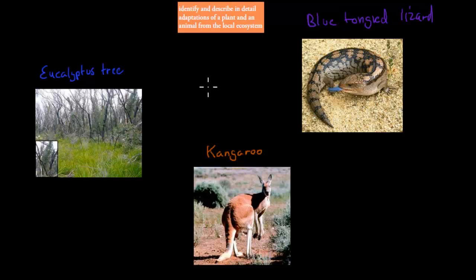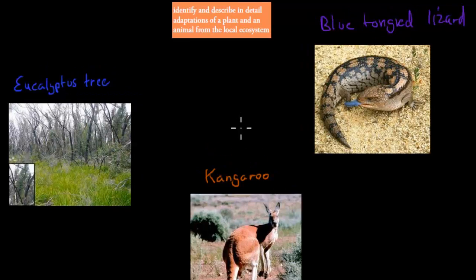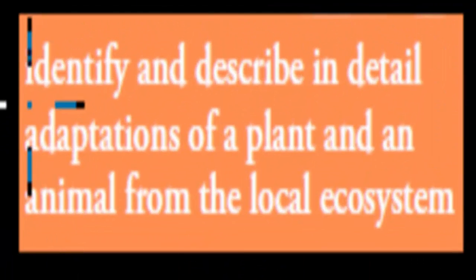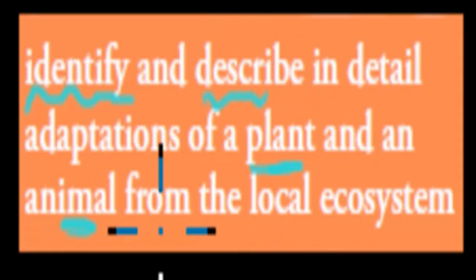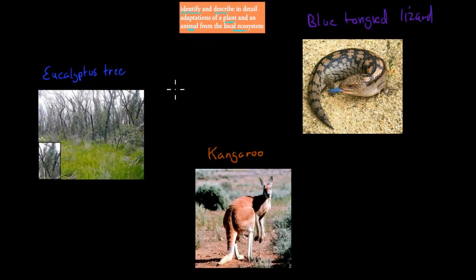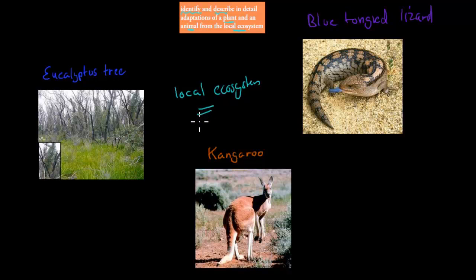If I were to ask you what the eucalyptus tree, the kangaroo and the blue-tongued lizard have in common, and you told me they all live in a similar environment, you would be correct. The extra dot point says: identify and describe in detail adaptations of a plant and an animal from the local ecosystem. All of these are within our local ecosystem, which is Sydney itself, and we can find all these different trees, plants and animals here.